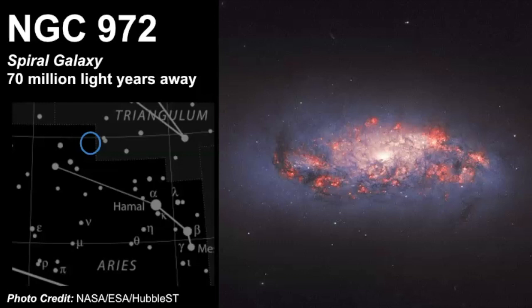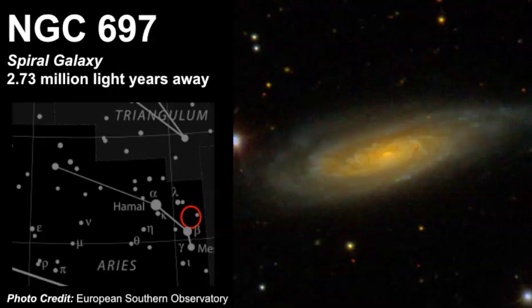Next we have NGC 697, this is a spiral galaxy that's estimated to be 273 million light years away and it's located in this region of the constellation.